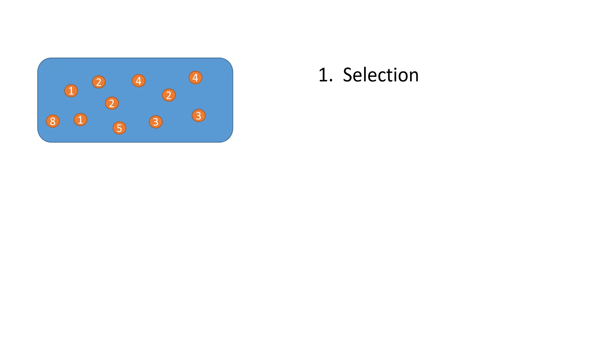Let's go back to the start where we had our world with our clients inside. The first thing we usually do is let them live, let them behave, see how they perform, and score them. Then the first step is selection. Each step I'm showing you can be implemented in any way you choose. I'm just going to show you those three basic steps and a very simple implementation. So the first thing is the selection — we simply take the best, like the best four or five. I'm going to choose the best four.